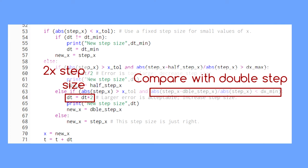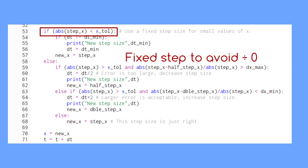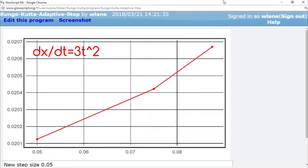Also notice that we're enforcing a fixed step size in case x gets very small to avoid dividing by zero.